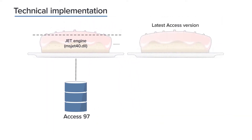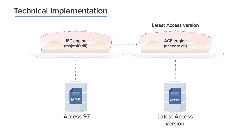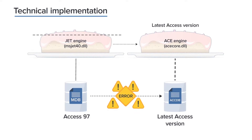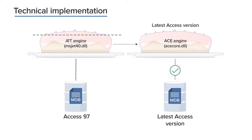When upgrading to the latest Access version, the legacy GET engine should be replaced with the modern ACE engine, which brings an upgraded file type. However, conversion to the modern file type is not a guaranteed process, with a number of factors leading to database integrity loss. As an alternative, we could keep the legacy file type, but the modern engine doesn't support it. So the direct upgrade wasn't possible. Our major challenge was to ensure flawless interaction of the ACE engine with the MDB file type.